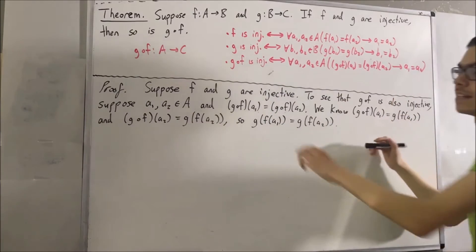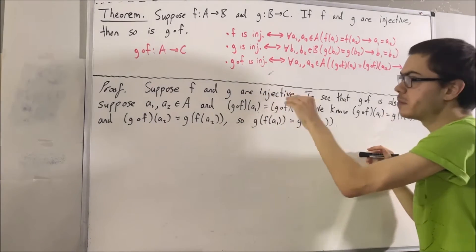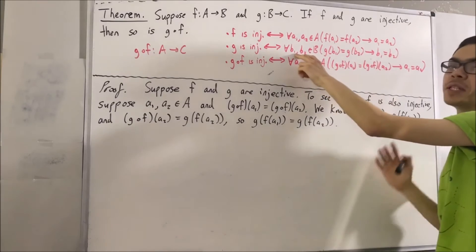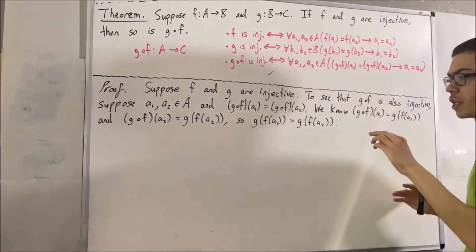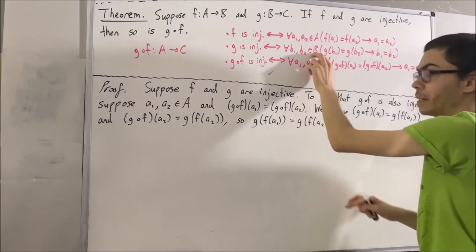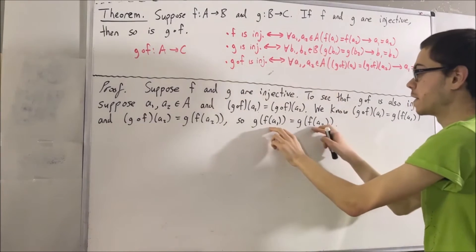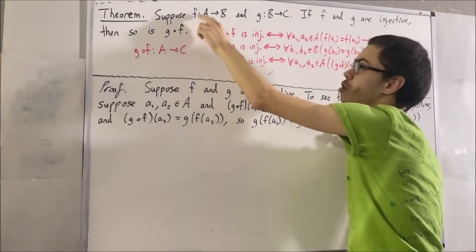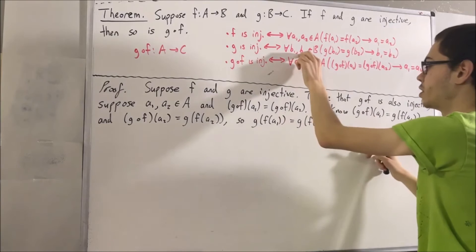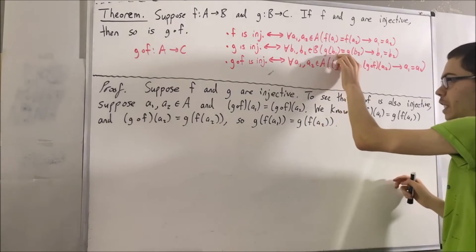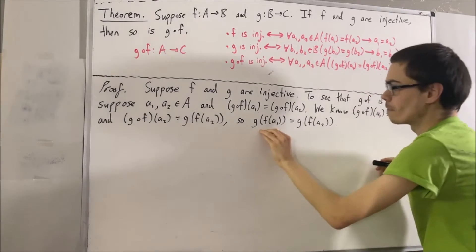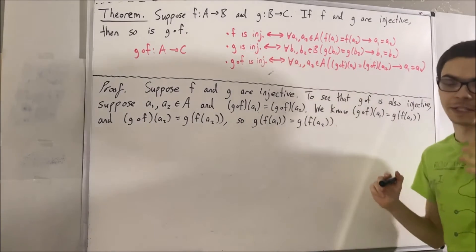Now we use the fact that g is injective, which means for every two elements b1 and b2 in B, if g of b1 equals g of b2, then b1 equals b2. Since f of a1 and f of a2 are elements of B, we can substitute b1 with f of a1 and b2 with f of a2. So: if g of f of a1 equals g of f of a2, then f of a1 equals f of a2. We already know the hypothesis holds, so we conclude f of a1 equals f of a2.